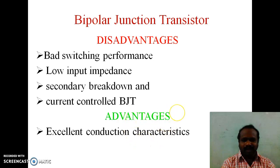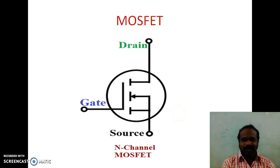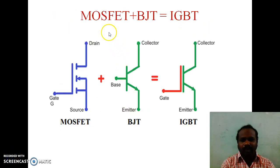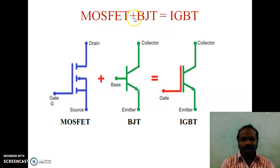The advantage of BJT is excellent conduction characteristics. This is the symbol of MOSFET. Advantages of MOSFET: excellent switching characteristics, high input impedance, and MOSFET is a voltage controlled device. Disadvantages of MOSFET: bad conduction characteristics and parasitic capacitance at high power rating. Now, we are combining both the MOSFET and BJT. When the MOSFET is combined with BJT, it gives IGBT — combining the advantages of both MOSFET and BJT.